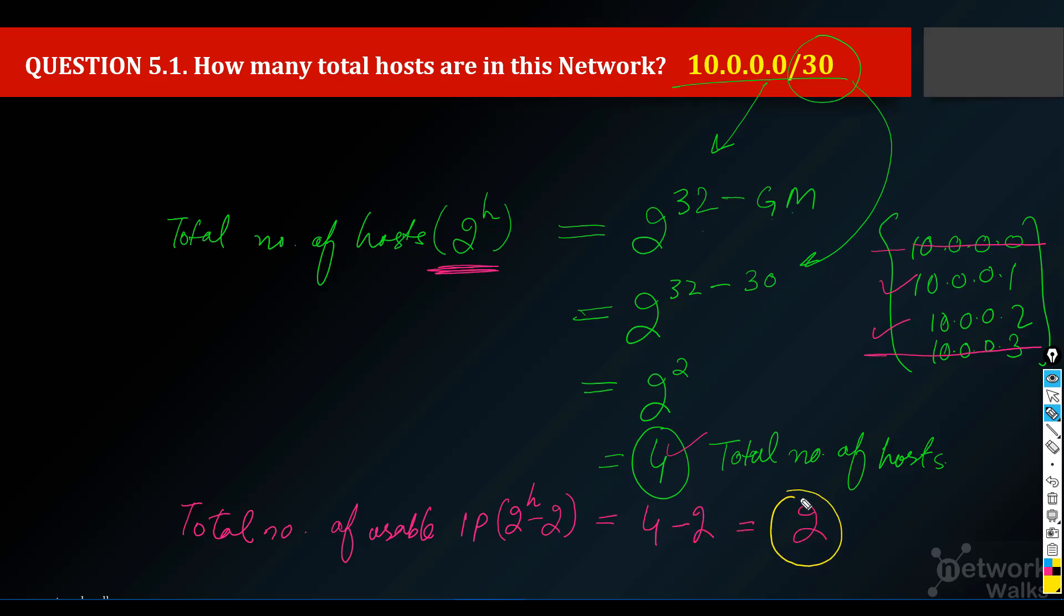This is how we can calculate. Very simple: 2 raised to power h, which means 2 raised to power 32 minus given mask. Out of 32 minus 30, so 2 raised to power 2 equals 4 IP addresses, and 2 are unusable.